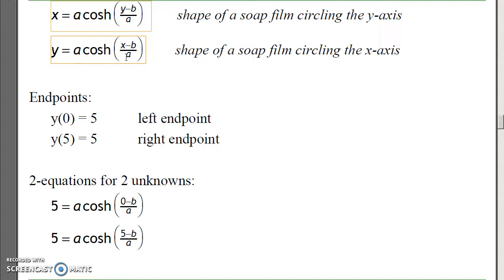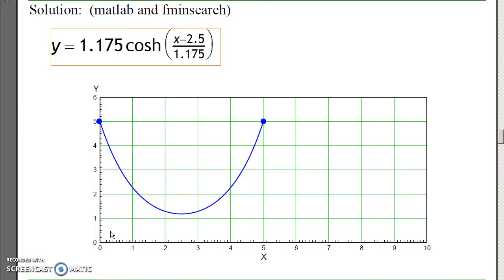Now, if I plug in the endpoint constraints, like I've got a disk of radius 5 at 0, a disk of radius 5 at 5. What's the shape of the soap film? Plug in the two endpoints. At the left endpoint, I've got y of 0 is 5, x is 0. At the right endpoint, y of 5 is 5, when x is 5. I've got two equations, two unknowns. To solve, this is where MATLAB and fminsearch are useful. I'm going to guess a and b, and have MATLAB iterate until this equation balances and that equation balances.